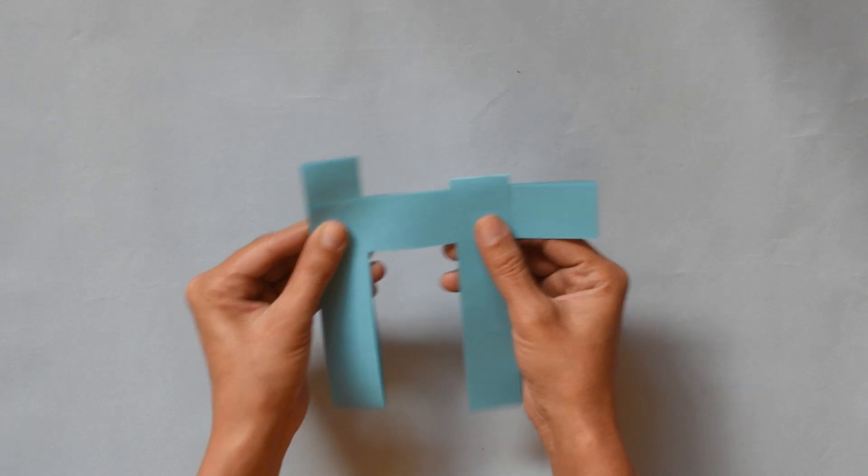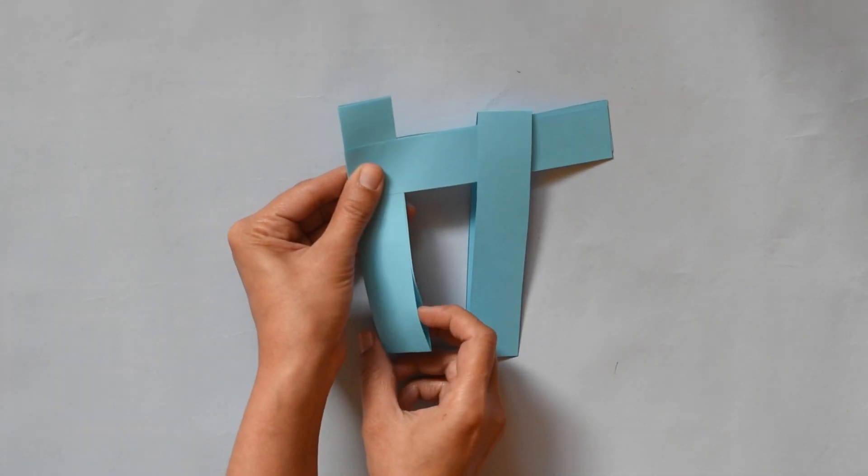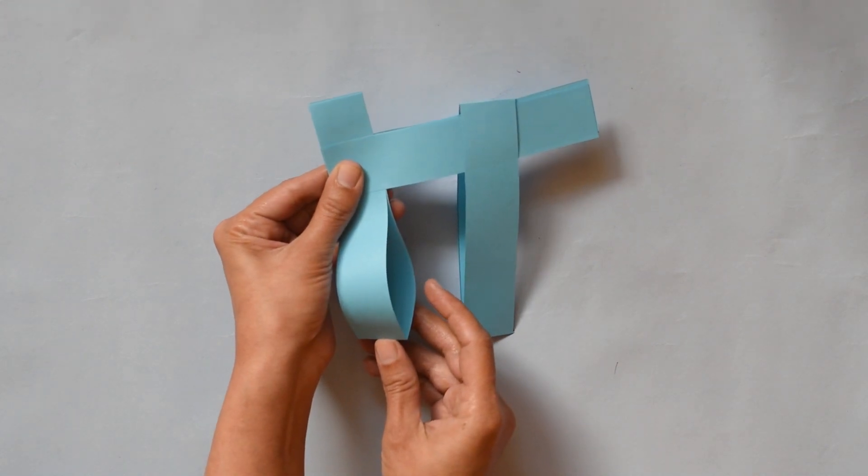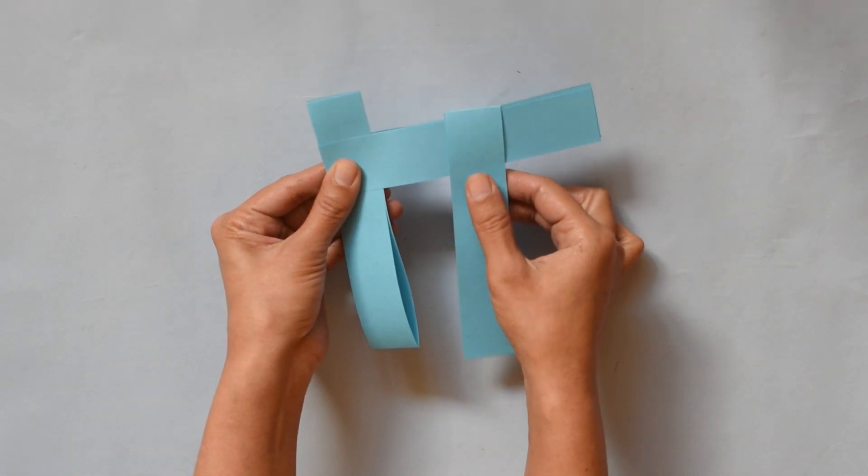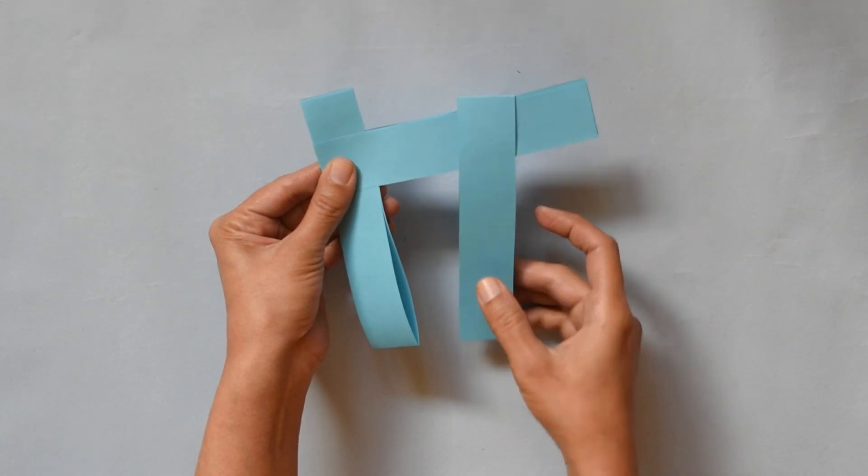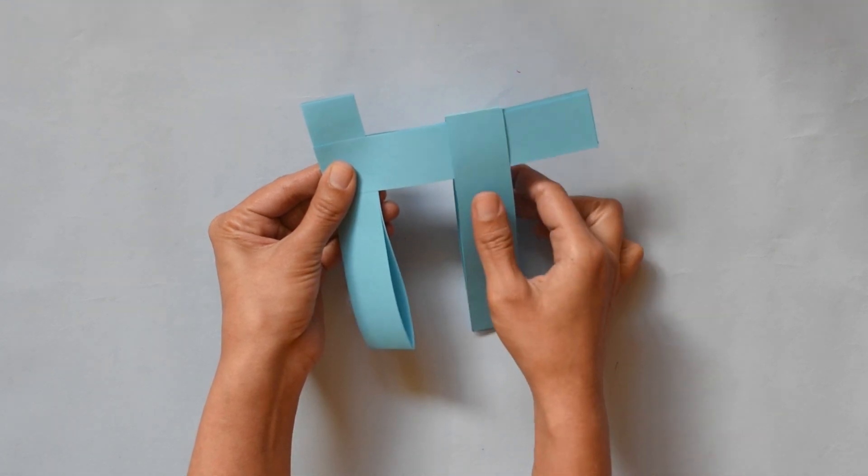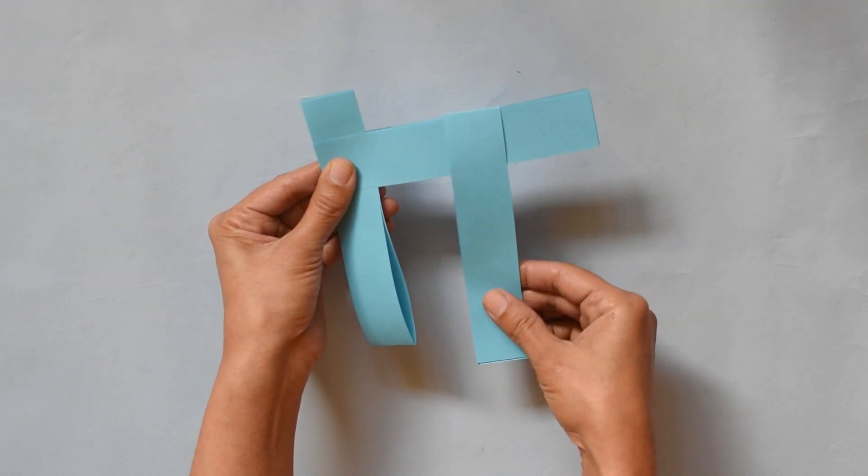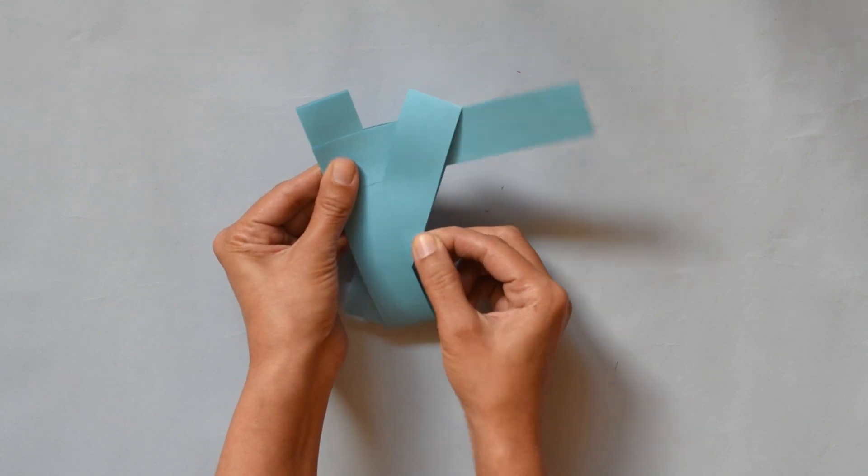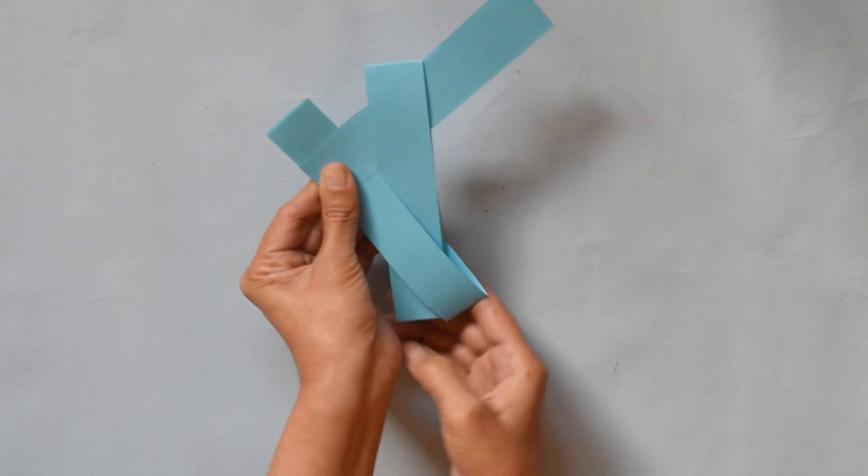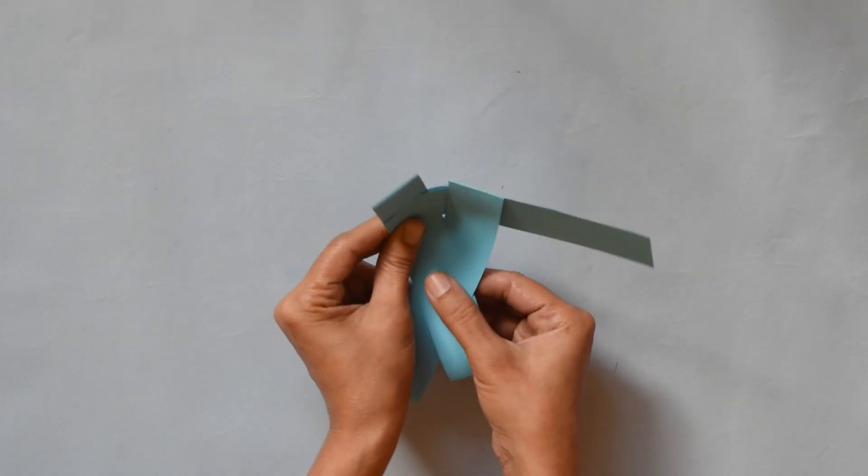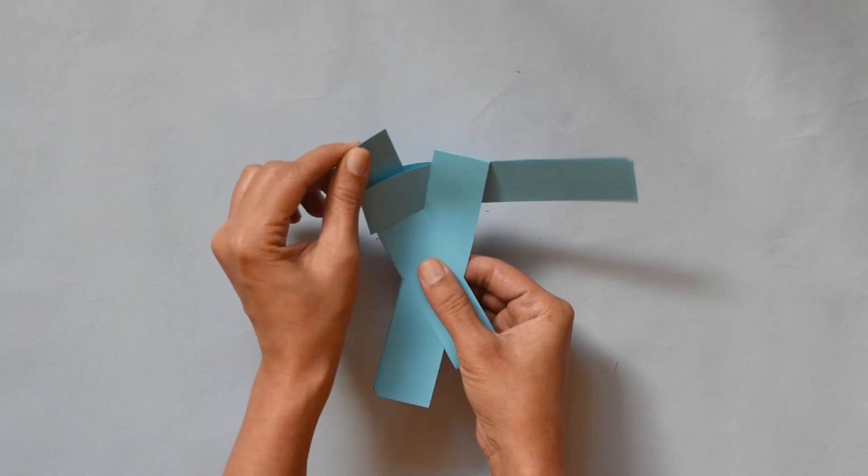Now what we are going to do. Here I have space. Like that. You can see here. So we are going to insert this strip inside this space. So hold like that and insert it. Use all your fingers for that and pull it. Now we get the shape like that.